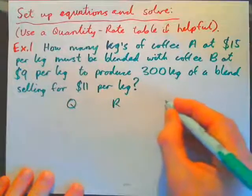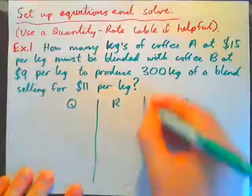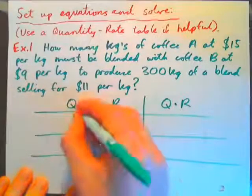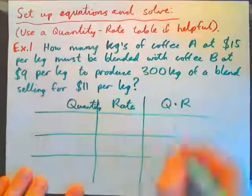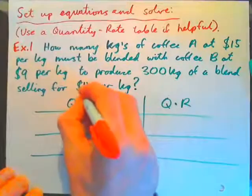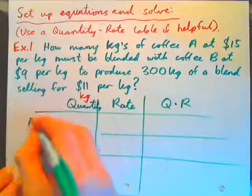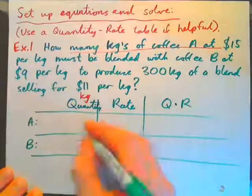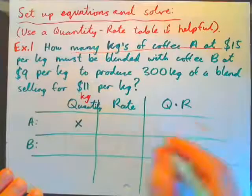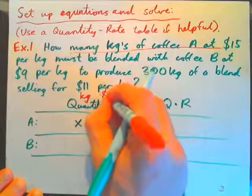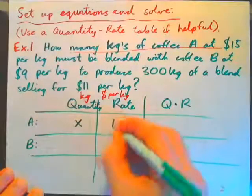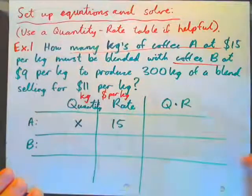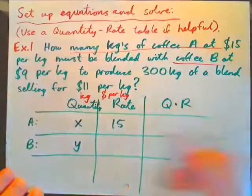We set up a quantity-rate table. Quantity is kilograms. We have coffee A and coffee B. Coffee A — we don't know how many kilograms, so we call it X — at $15 per kilogram, that's the rate, dollars per kilogram, so 15. Must be blended with coffee B at $9 per kilogram. We don't know the amount of coffee B, so call it Y, and the rate is $9 per kilogram.